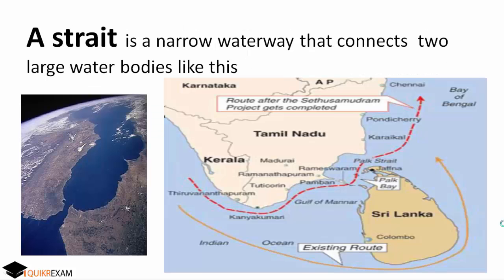Next, what is a Strait? A Strait is a narrow waterway that connects two larger water bodies. In the left picture there is a narrow waterway between two larger water bodies. In the right picture we have shown Palk Strait, which connects the Bay of Bengal with the Arabian Sea.